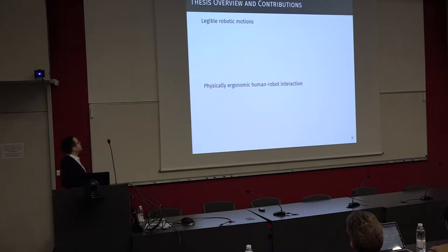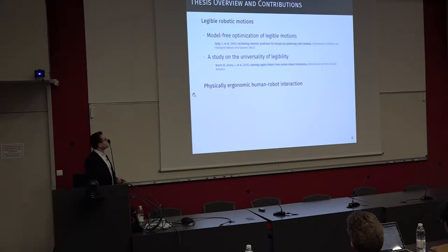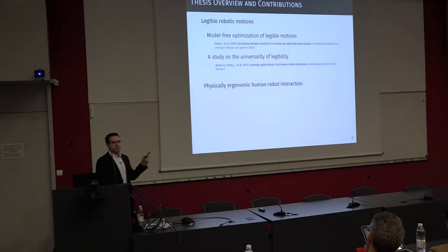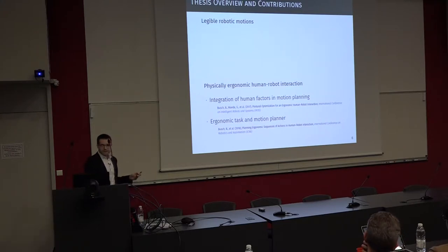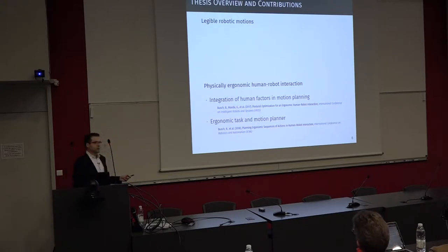For that, we considered optimizing robot behaviors and motions to help the human co-worker, and we have addressed two main axes. First, increasing the legibility of robotic motions — simply how well you can understand what the robot's true intentions are. And then, physical ergonomics of the interaction. In the legibility sections, we made two main contributions: a model-free optimization for legible motions, and a study on the universality of those legible motions. In the physical ergonomics section, we first integrated human factors in motion planning, then went deeper by incorporating that into task allocation as well. I note that a paper mentioned as under review in the manuscript has now been accepted to the ICRA conference this year.